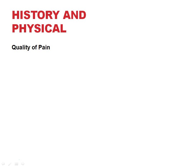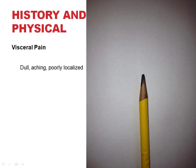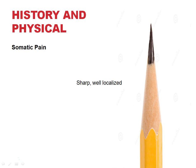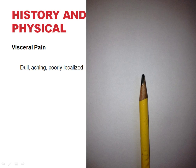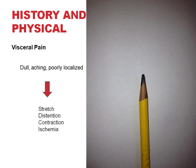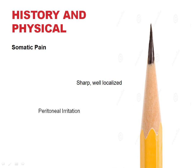First, consider the quality of pain. Classically, abdominal pain can be thought of as visceral — dull, aching, and poorly localized — compared to somatic pain, which is sharp and well localized. Visceral pain is usually caused by stretch, distension, contraction, or lack of blood flow to an abdominal organ. Somatic pain is caused by peritoneal irritation from inflammation or pooling of blood and fluids.